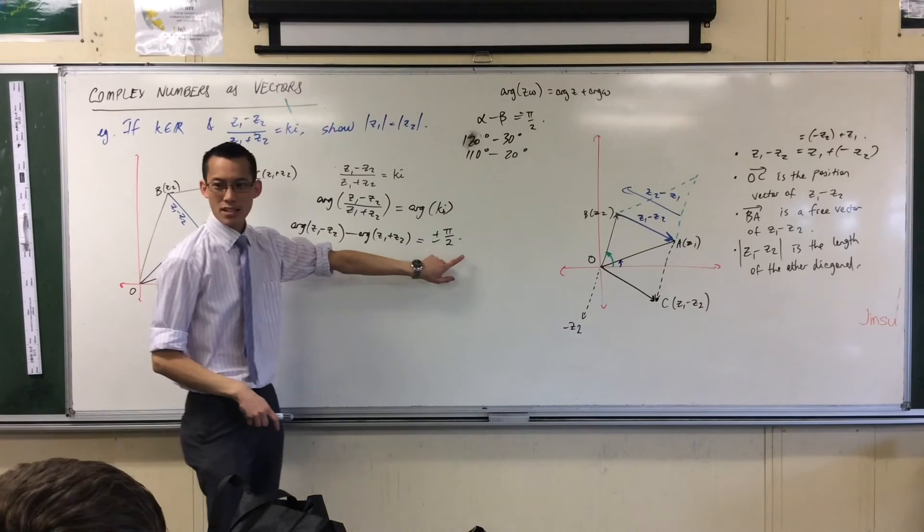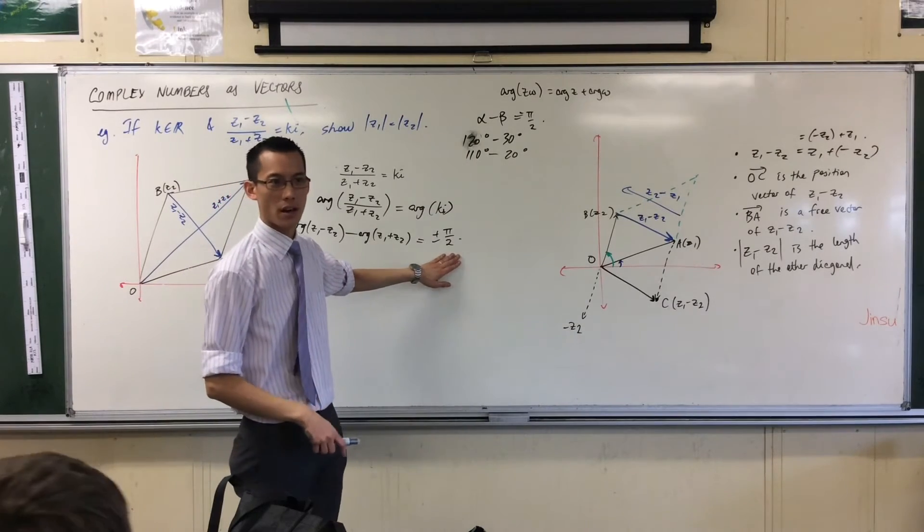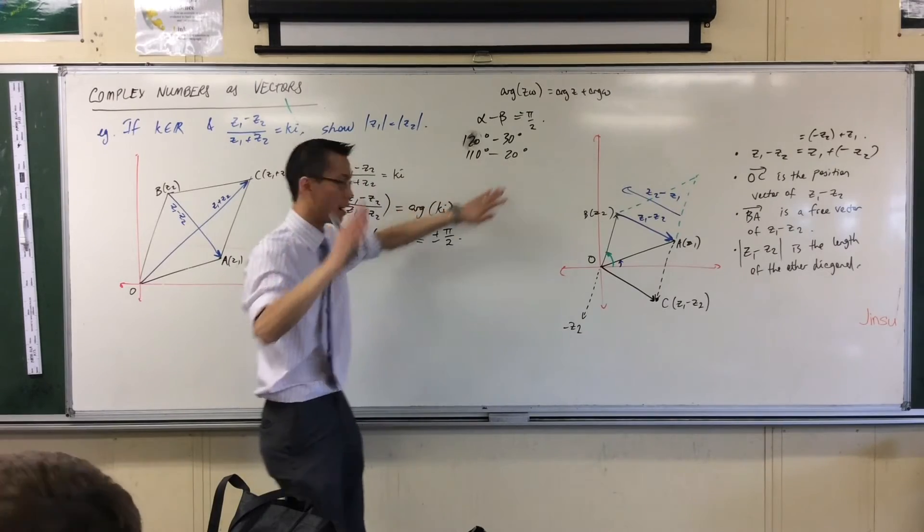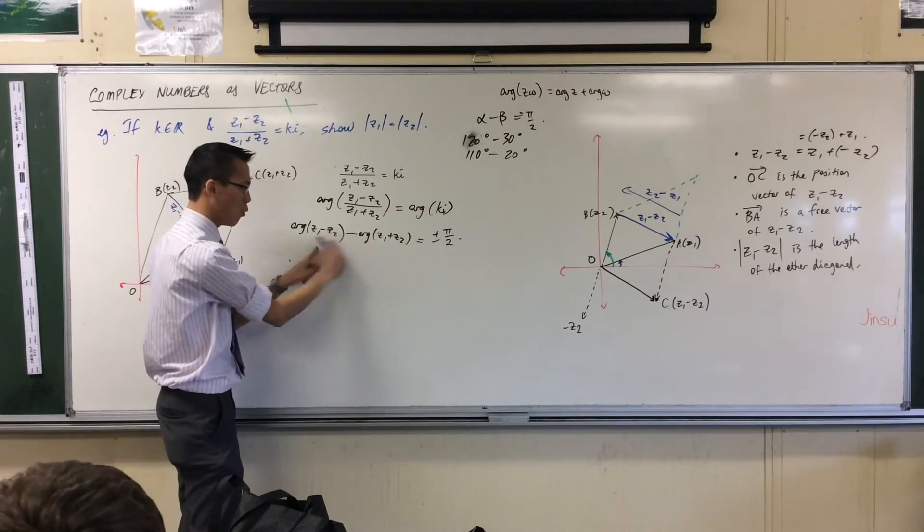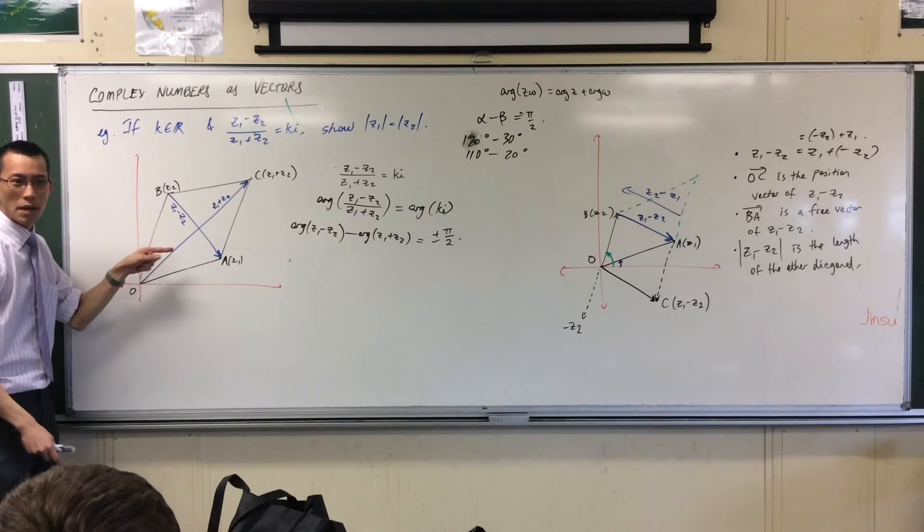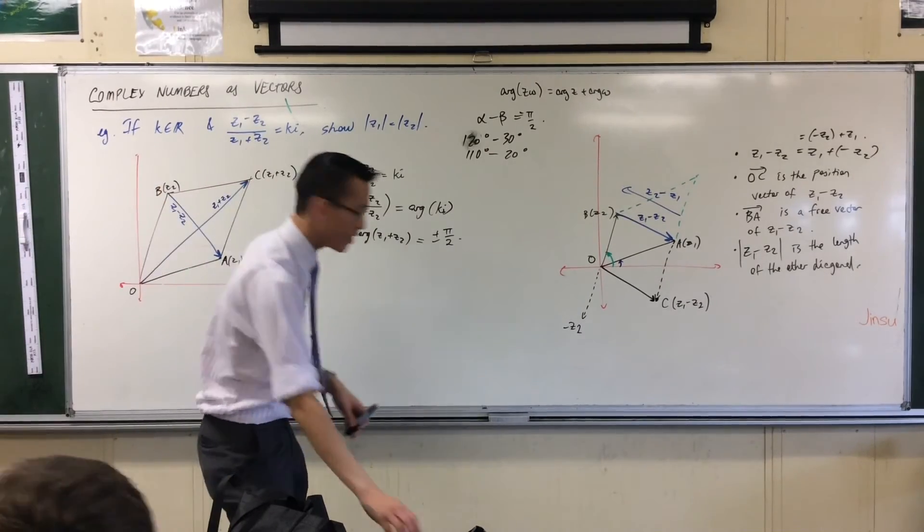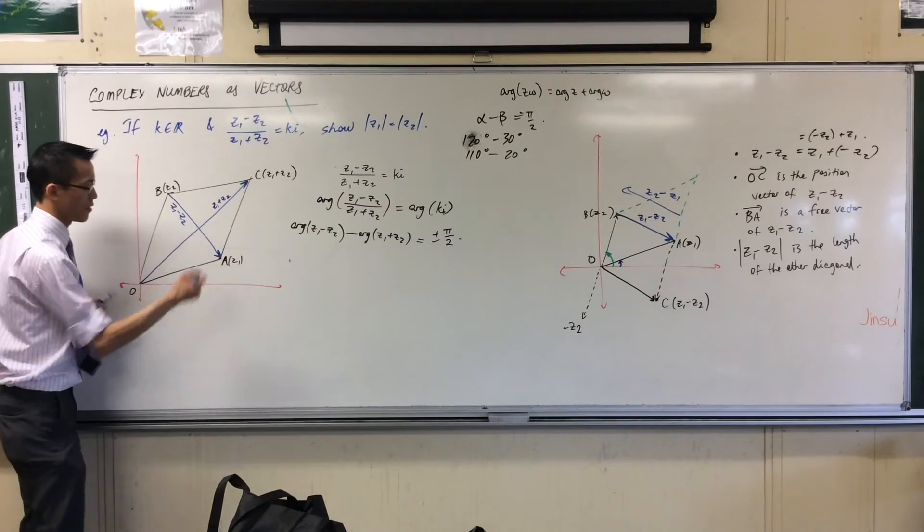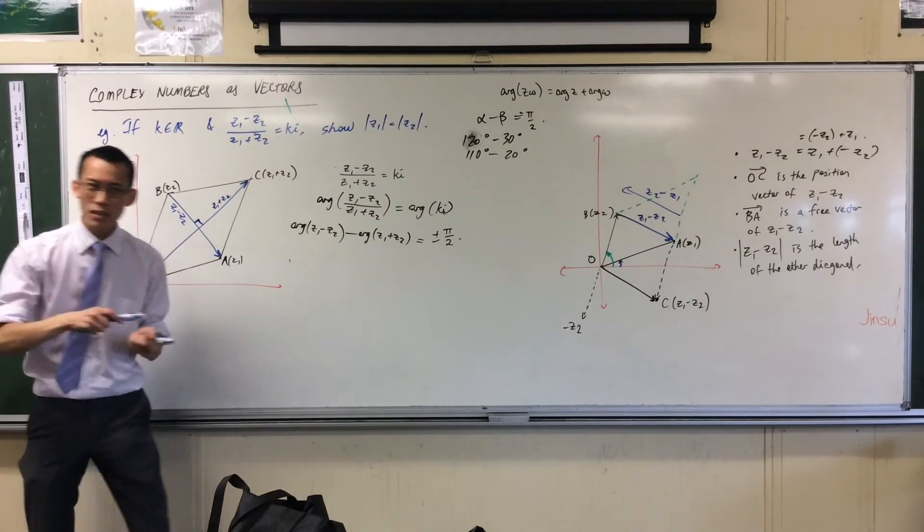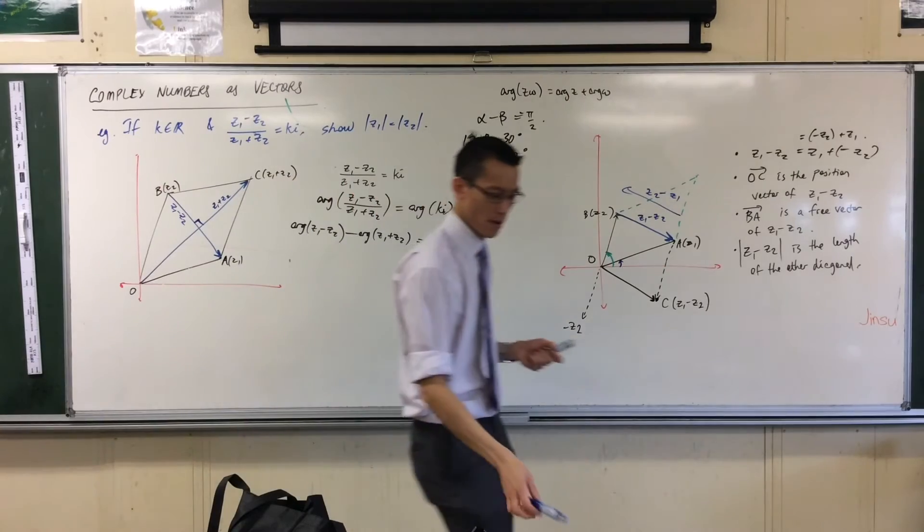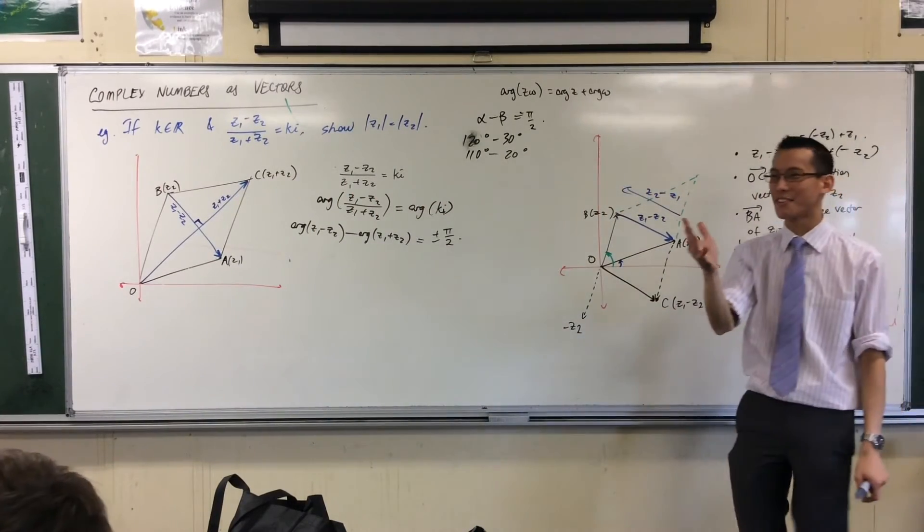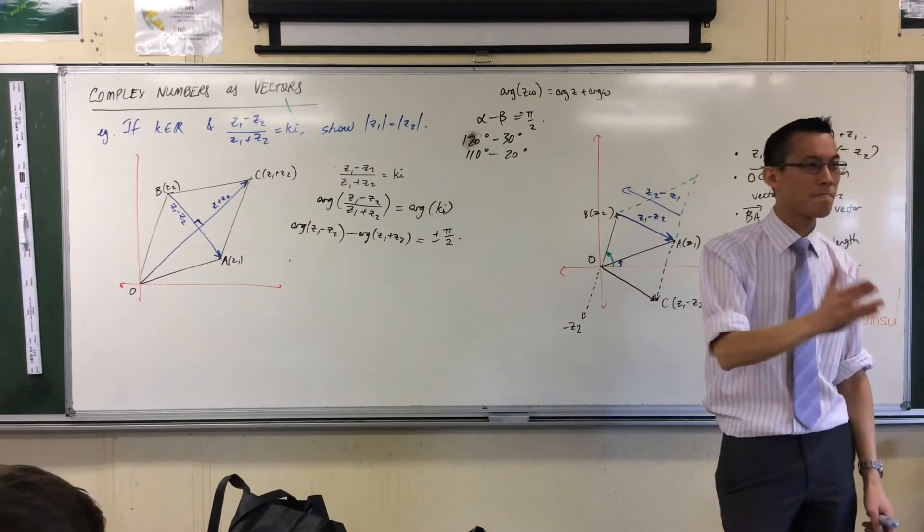So what does that mean about these two? They're at right angles to each other. They're 90 degrees, pi on two radians, off from one another. But I know where these guys are. What are these two guys? They're the diagonals of my parallelogram, which apparently according to this are at right angles.